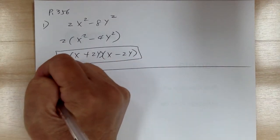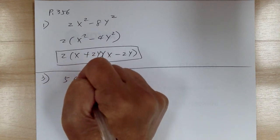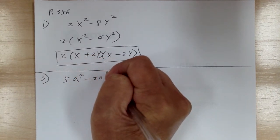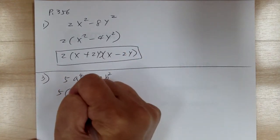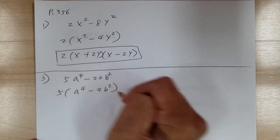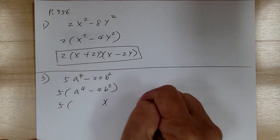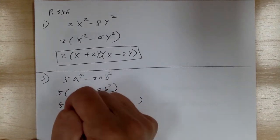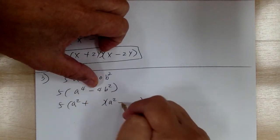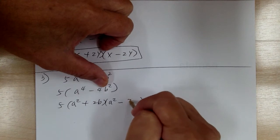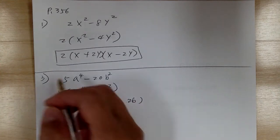Number 3, you have 5a to the 4 minus 20b squared. Step 1, common factor. Factor out the 5, so you get a to the 4 minus 4b squared. This is step 2a, difference of squares. Get two sets of parentheses: a squared, a squared, plus or minus, 2b and 2b. Check again to see if you can factor it again, but no, this cannot. So this is it.